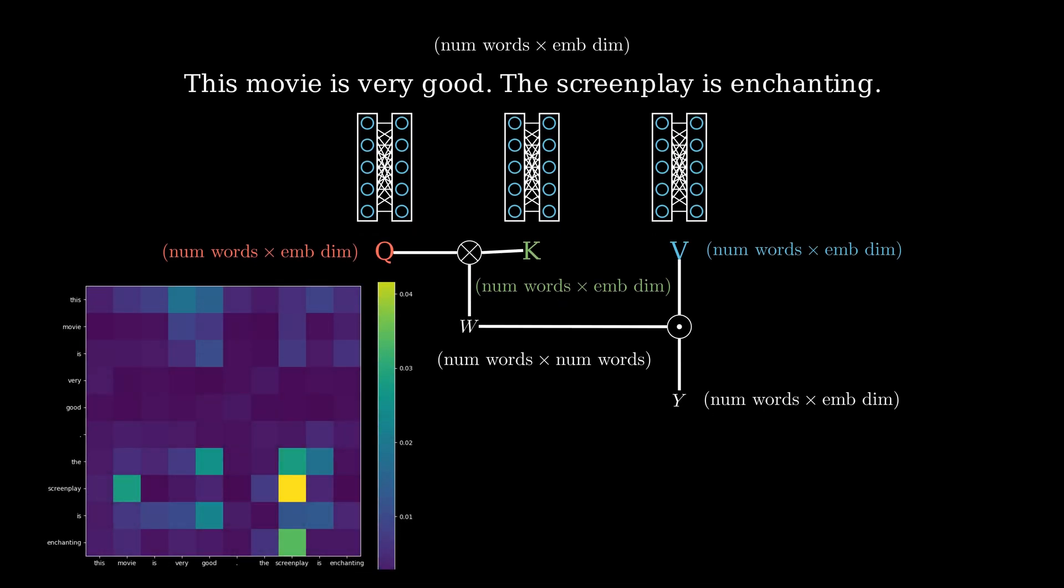Here is an attention weight matrix from a transformer trained on the IMDB dataset. From this we can see it capturing things like the word screenplay which is related to movie and that the enchanting word is for the screenplay. However, it also missed a lot. There is no understanding as to what is good in this sentence or in fact what is being said about the movie. Nevertheless, this weight matrix is then used to get the output which is the same dimension as the input. This output can be thought of as the input modified by the attention mechanism to capture the important information.